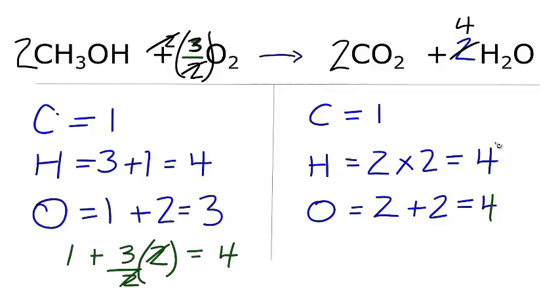So now let's clean it up so it looks a little bit more presentable. And there you have it. That's the balanced equation for CH3OH plus O2 yields CO2 plus H2O. We have the coefficients of two, three, two, four.